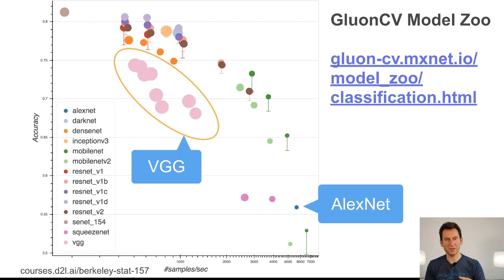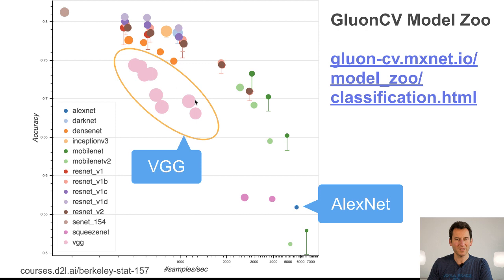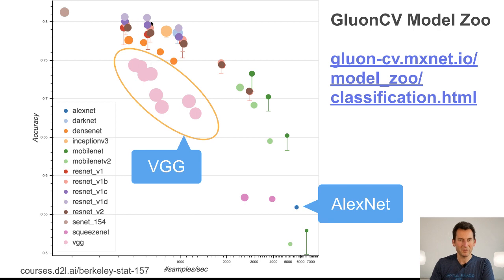Looking at how this plays out in practice, here's a plot of throughput versus accuracy. VGG is a lot bulkier than AlexNet, so it's much slower to push data through. There's an entire family of these networks, and the size of the circles indicates the memory footprint — and they are quite large. It became clear this wasn't the way forward. What followed was a move back to smaller networks but with higher accuracy. These models are available from the Gluon model zoo as pre-trained downloads.